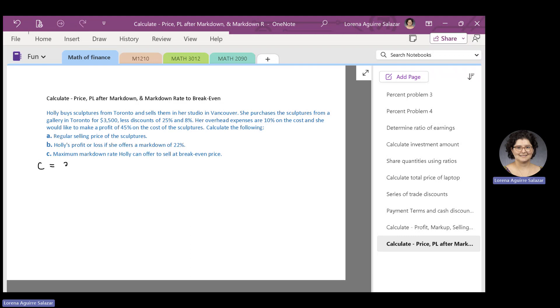Because Hoed qualifies for the discounts of 25% and 8%, we can say that she pays $3,500 multiplied by 1 minus 0.25 multiplied by 1 minus 0.08 dollars for the sculptures. 0.25 is the decimal corresponding to 25% and 0.08 is the decimal corresponding to 8%.